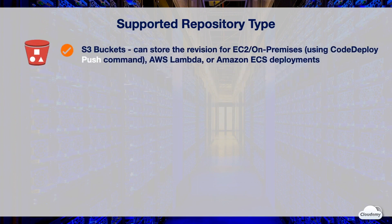You can store the application revision in an S3 bucket. For EC2 or on-premises deployments, you can bundle the application content and an app spec file into an archive file and push it to an S3 bucket using the push command. You can then use CodeDeploy to deploy the revision from S3 to the instance. For Lambda and ECS deployments, you can upload the app spec file to an S3 bucket and reference the S3 location in the deployment.